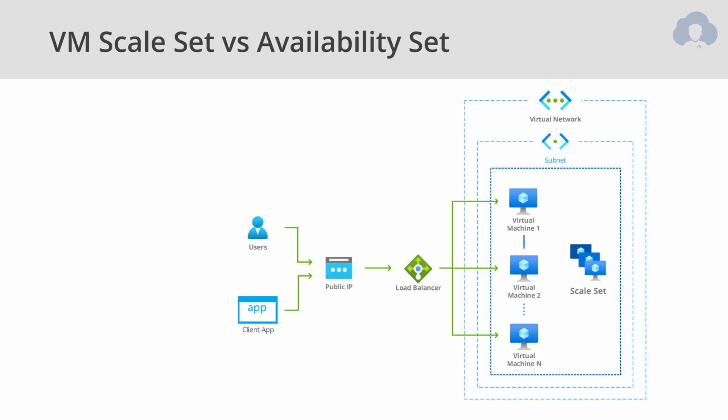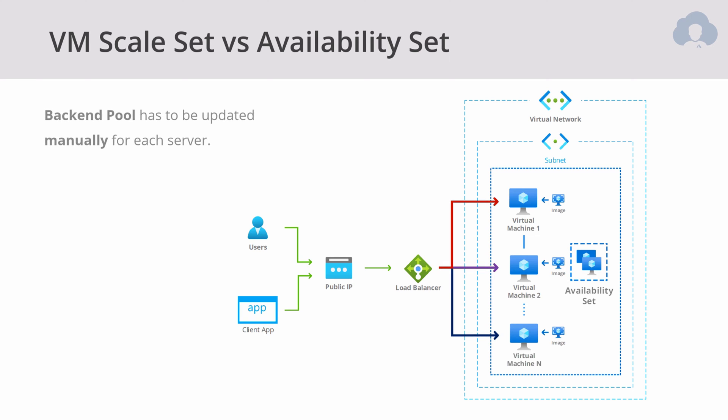One thing I want to mention is the difference between a scale set and an availability set. A scale set creates and deletes virtual machines automatically, so it needs to automatically update the load balancer. But when you're using an availability set, you're creating a unique set of virtual machines, so it is your job to manually update backend pools yourself. That's the key difference when using availability sets.